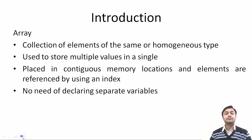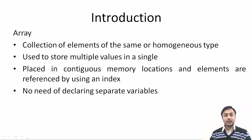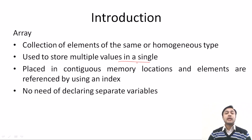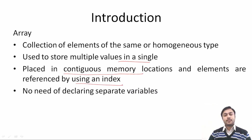What is an array? The array is a collection of elements of similar or homogenous data type. Homogenous means similar data type. It is used to store multiple values in a single variable name. The elements are stored in a contiguous memory location and you can access the element by using an index. There is no need of declaring separate variables.